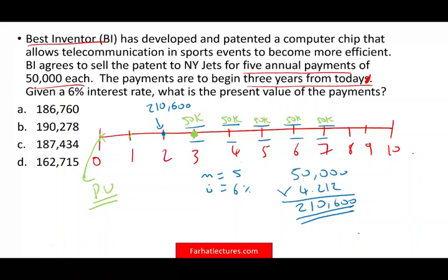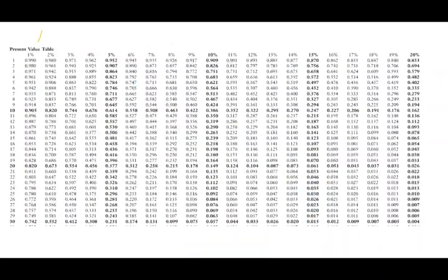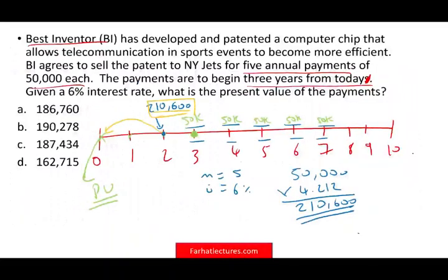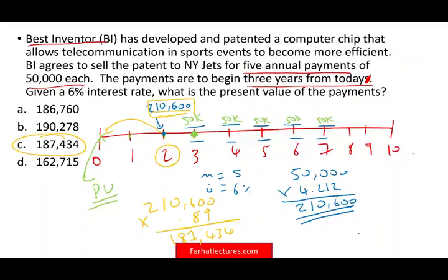Now I don't care about year two — they're asking me how much this single amount is worth today. All I have to do is discount this payment two periods using 6%. I go to the present value of one payment, two periods, 6%, and the factor is 0.089. I take the value of $210,600 at year two and discount it at 0.89, which gives me $187,434. That is the answer.